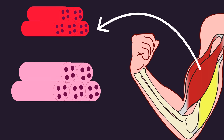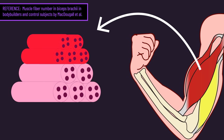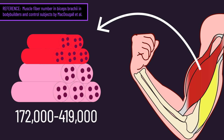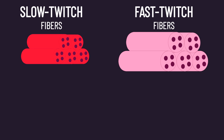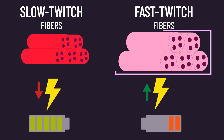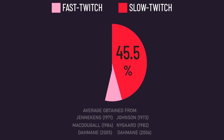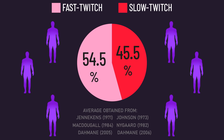As a fun fact, we know that muscles contain muscle fibers, and this study estimates the number of fibers within the biceps may vary between 172,000 to 419,000. Not all muscle fibers are the same — we can categorize them as either slow-twitch or fast-twitch. Slow-twitch fibers are generally low-force-producing, highly fatigue-resistant, and smaller in size. Fast-twitch fibers are generally high-force-producing, very fatigable, and larger in size. When averaging out the research, the biceps appear to contain slightly more fast-twitch fibers than slow-twitch, though this percentage can vary between people.